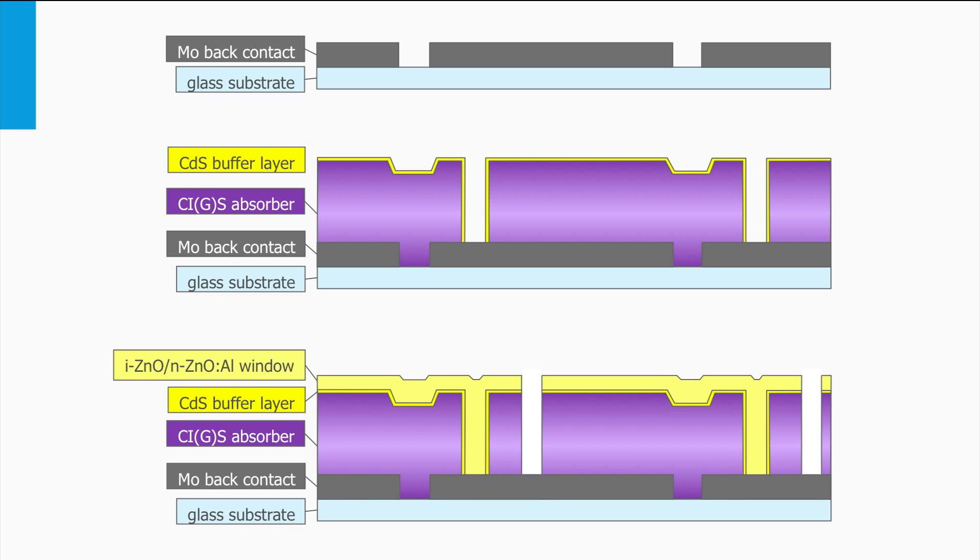Finally, the intrinsic and p-doped zinc oxide is deposited followed by a final laser scribe step. Now the front TCO electrode is connected with the molybdenum back contact of the next solar cell.